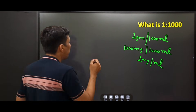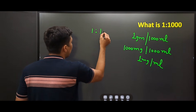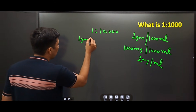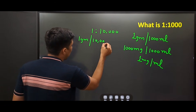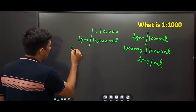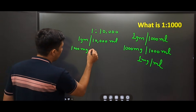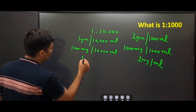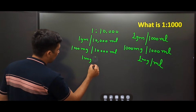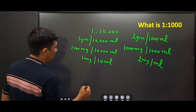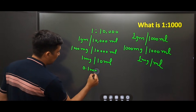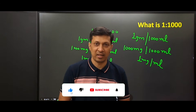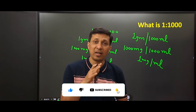So what will be the meaning of one in ten thousand? It will mean one gram in ten thousand ml, or one milligram in ten ml, or 0.1 milligram in one ml. In this way the dilutions are represented. Now we will see what are the indications for different types of dilution of adrenaline.